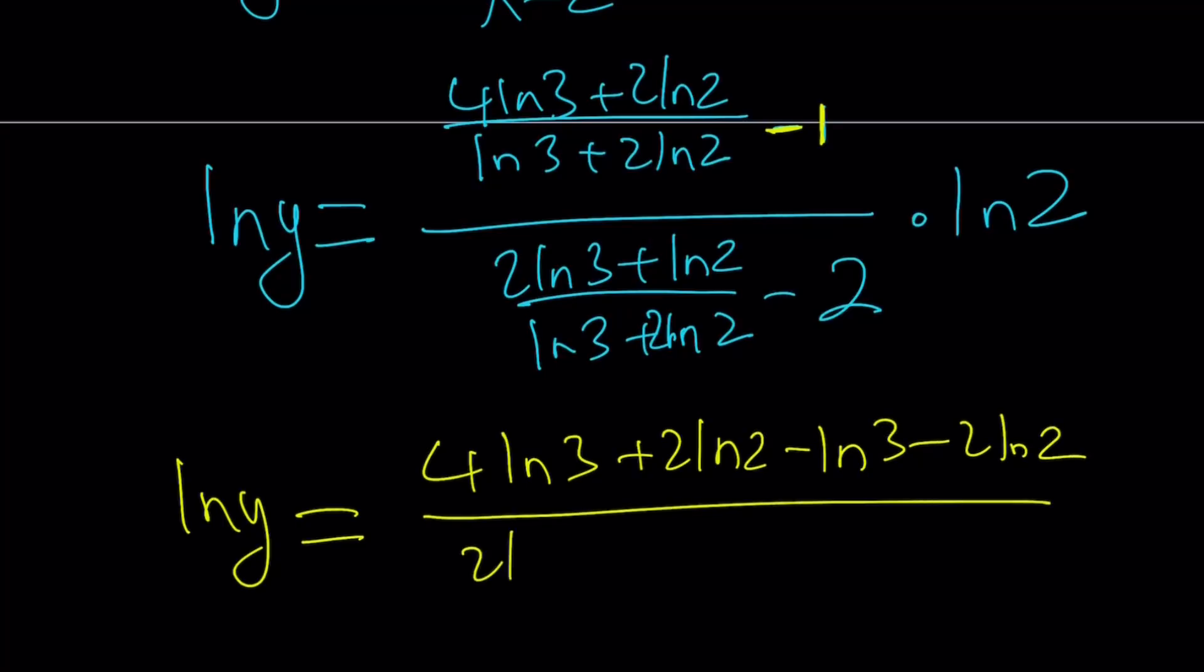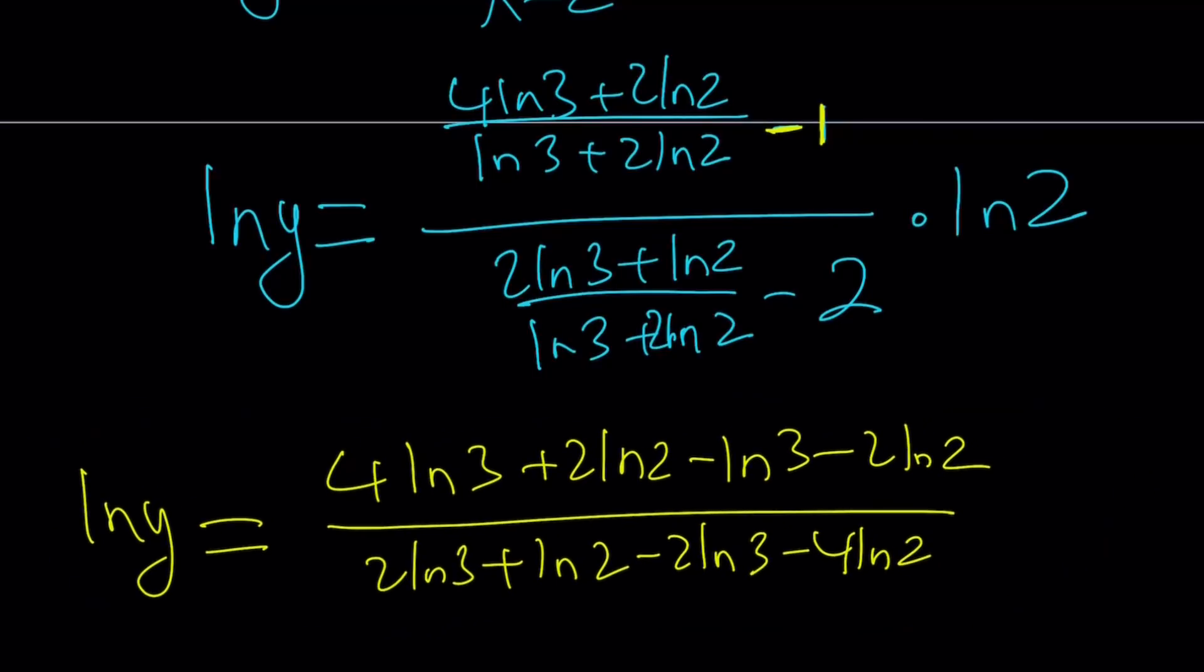That is divided by 2 ln 3 plus ln 2 minus 2 ln 3 minus 4 ln 2. Again, let's go ahead and move this stuff a little bit to the left so we can have room. All right, here we go. And now,